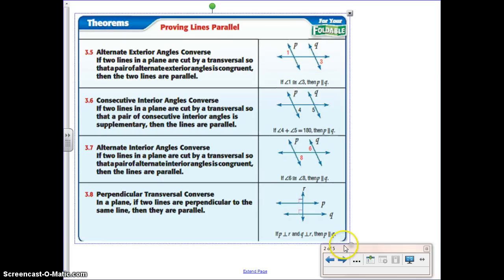The first one is using the fact that if you know that alternate exterior angles are happening and we know that they are equal, and two lines in a plane are cut by a transversal so that a pair of alternate exterior angles is congruent, then the two lines must be parallel. So again, if we know angle 1 is equal to angle 3, then those lines must be parallel.